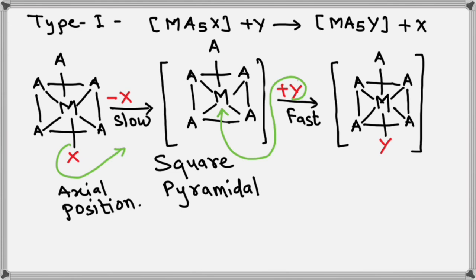So case number one, initially what happens? This X, which is present at axial position, gets detached from the complex. And thus, it takes the shape of, we can say, square pyramidal shape.